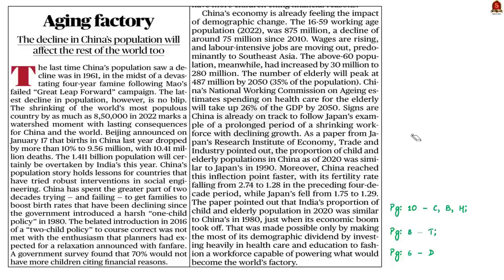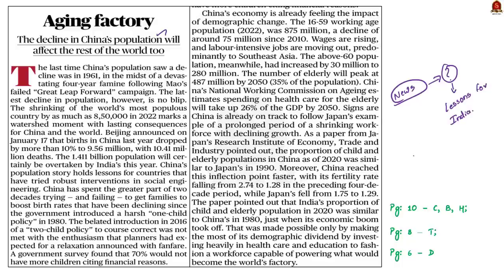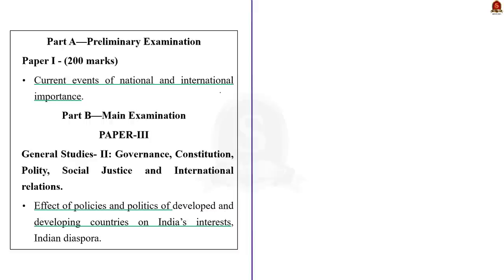Now look at this editorial article. It is about China's population decline. This news has been coming repeatedly in the newspaper. You should think why this news is important. It is significant because China's population story has lessons for countries that have tried robust interventions in social engineering. In this discussion, we will see what led to China's population decline and the consequences of this decline. The syllabus regarding this discussion is highlighted here for your reference.